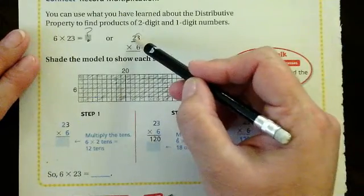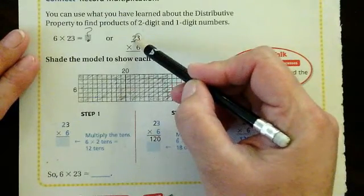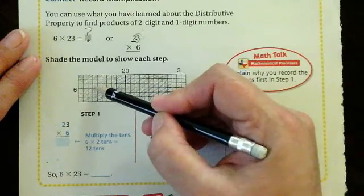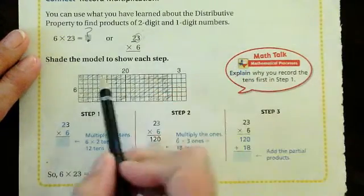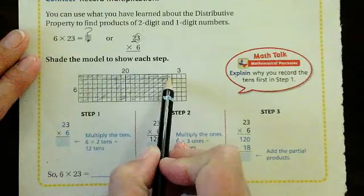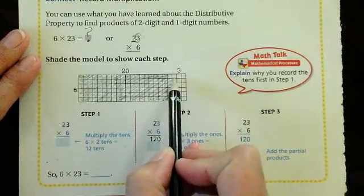Okay, so I have six rows, right? One, two, three, four, five, six rows of twenty. And then I have six rows of three.